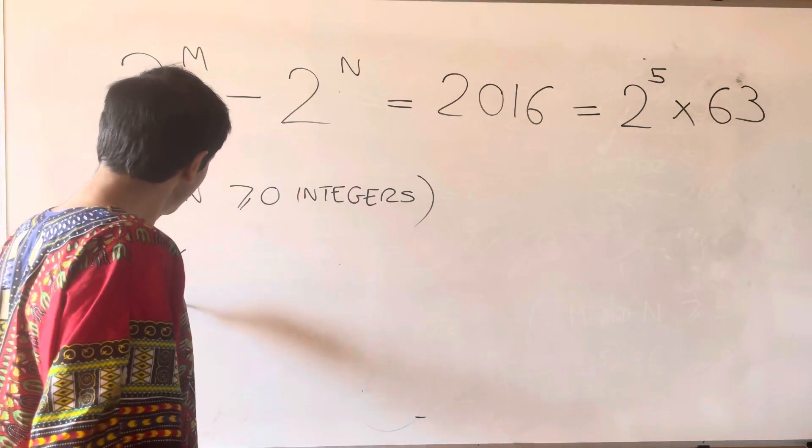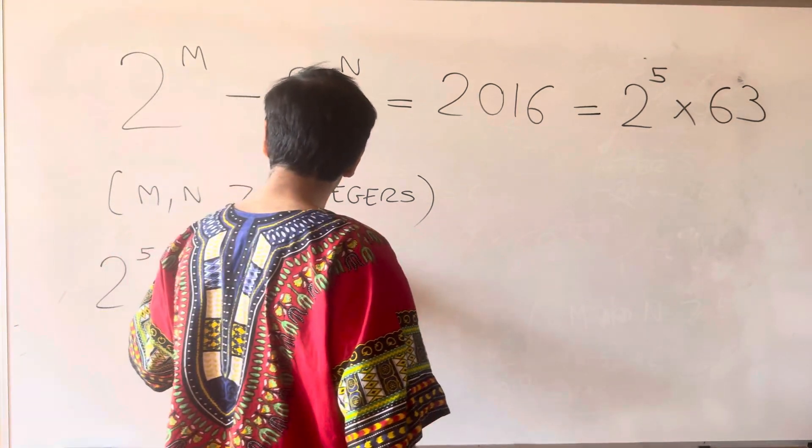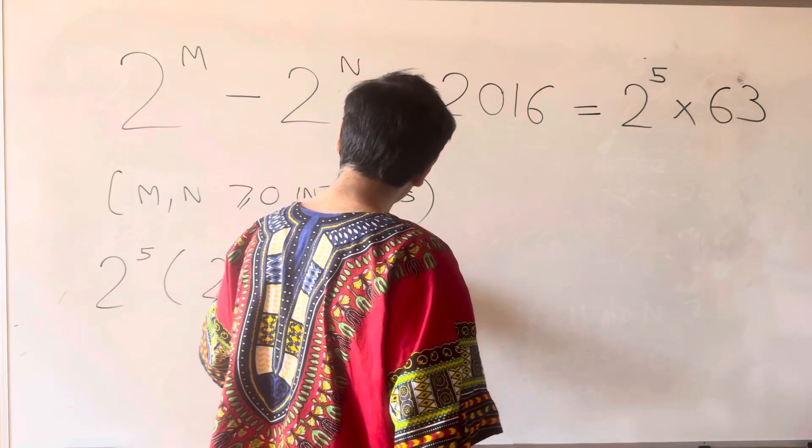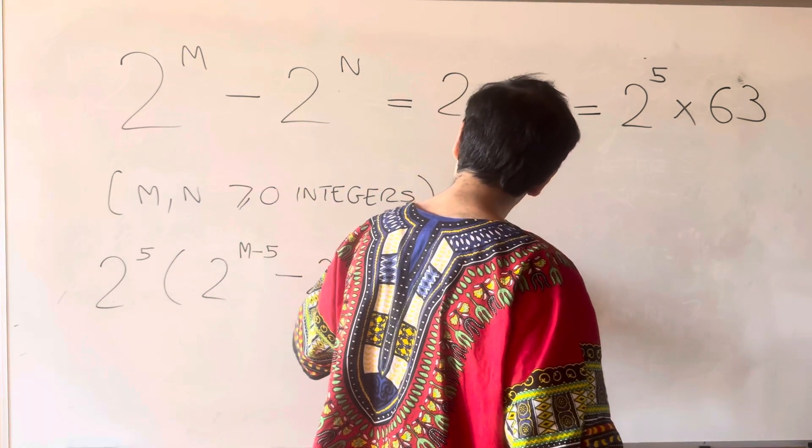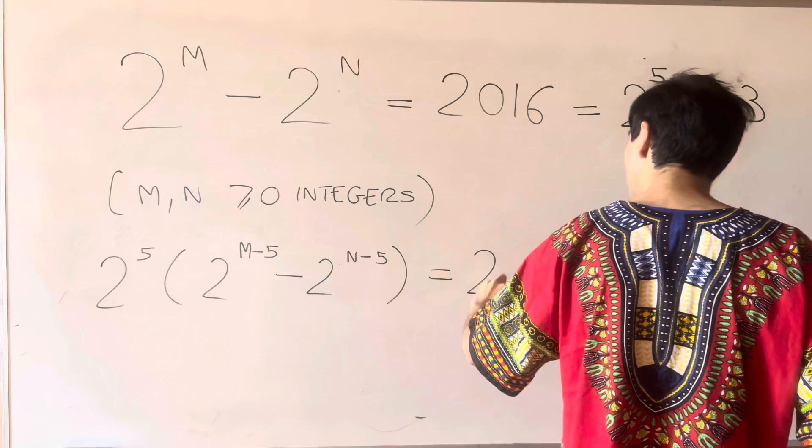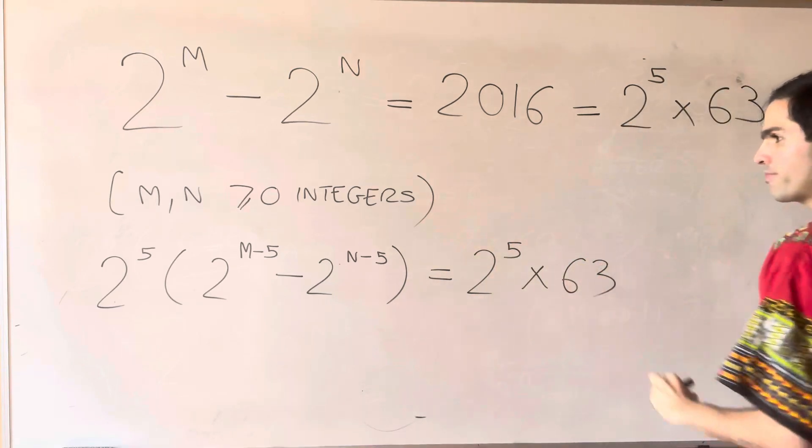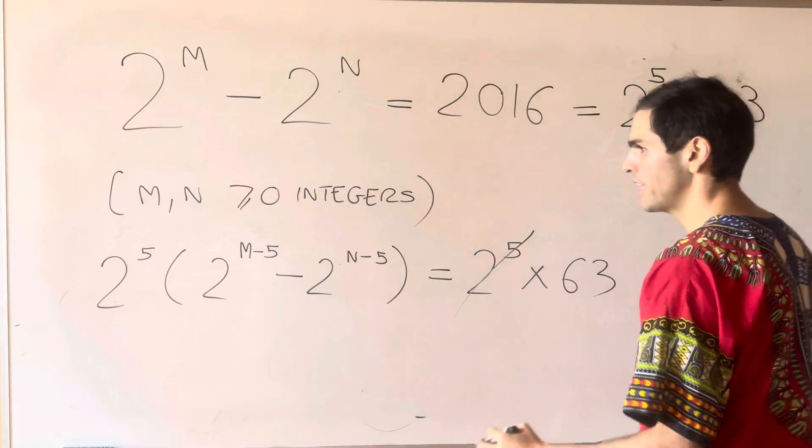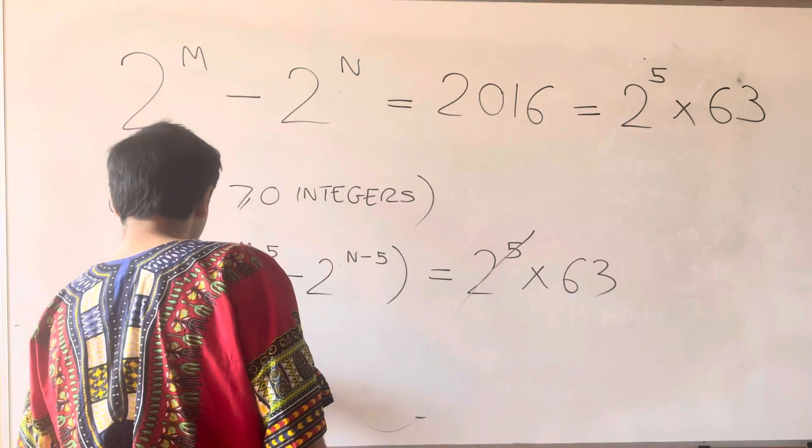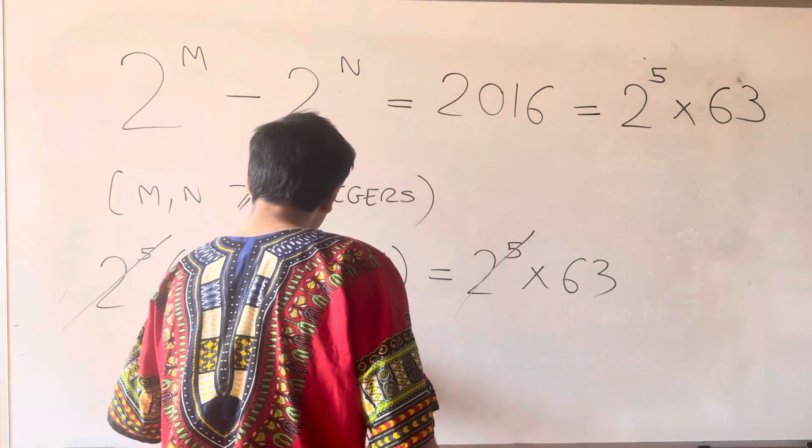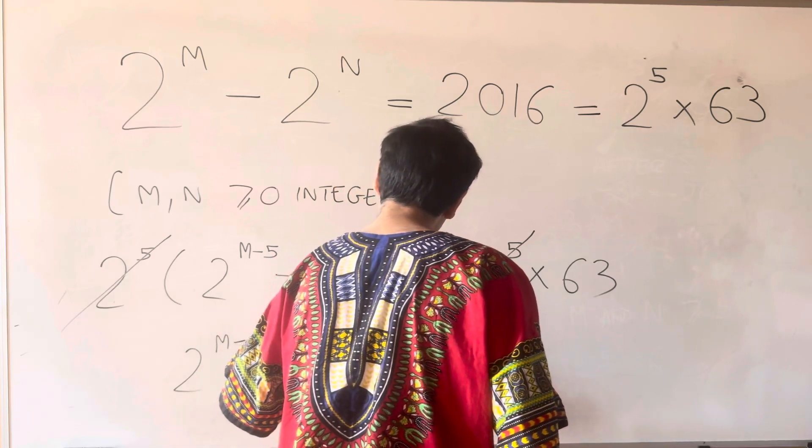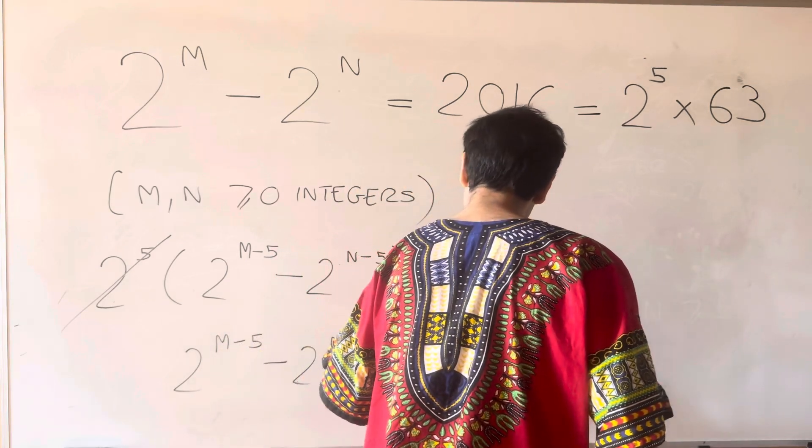So what we get is 2 to the 5th times 2 to the m minus 5 minus 2 to the n minus 5, and that's 2 to the 5th times 63. So this cancels out, and then we get 2 to the m minus 5 minus 2 to the n minus 5 is 63.